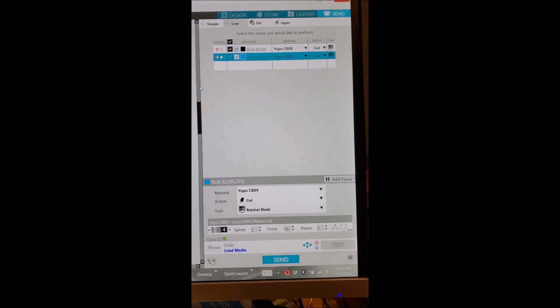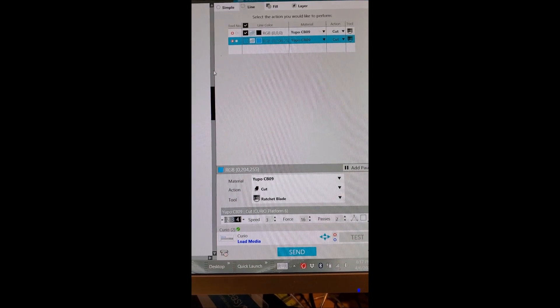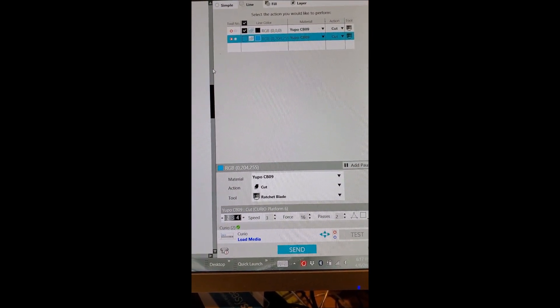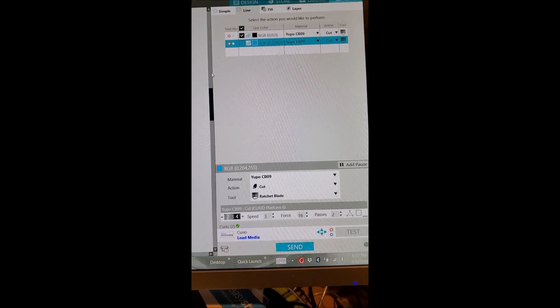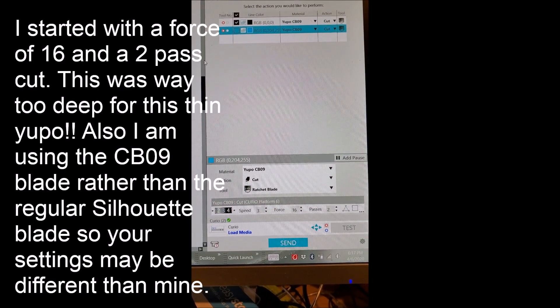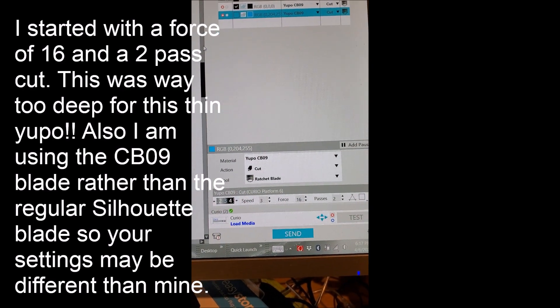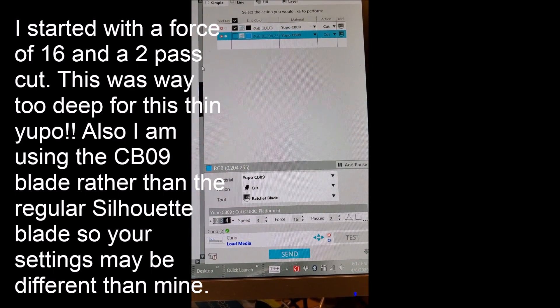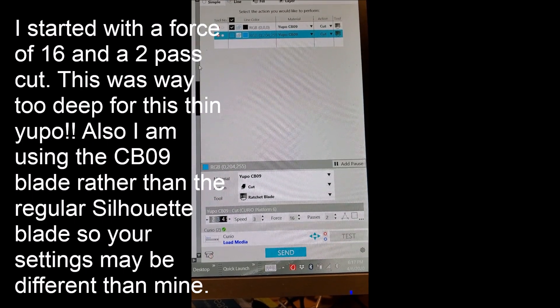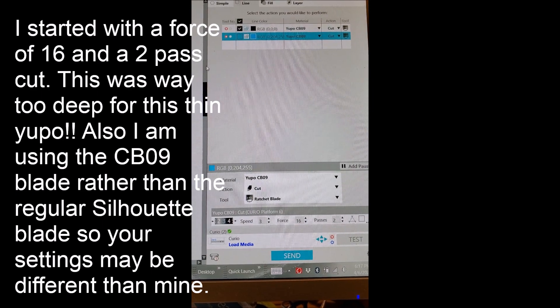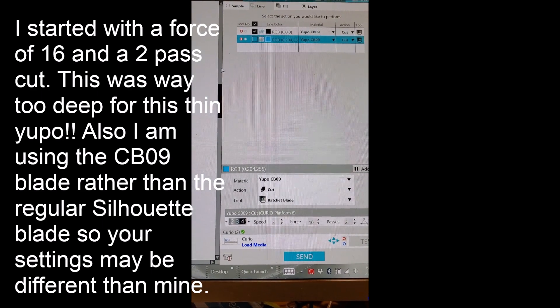And now I'm going to show you, if you can see, I don't know if this is going to work, but we'll try. I have the settings for Yupo paper. And I use the CB09 blade rather than the Silhouette blade, but you can see my settings there. Speed of 3, force of 16. I do two passes. So I do a lighter force and two passes. And I'm using all six platforms. So I'm going to load this up, let it go, and I will be back with the results.